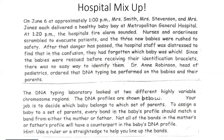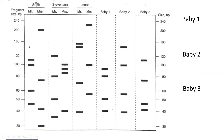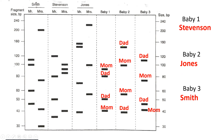Here's a practice question: you're given unique banding patterns from three different sets of parents and three babies, and you have to figure out which baby came from which parents. Remember, a baby is made half from one parent and half from the other. So a DNA fragment in baby one had to come from one of baby one's parents. Looking at fragment sizes on the gel axis, I can match baby one's fragments to the Stevensons, so baby one is baby Stevenson. Baby two is baby Jones, and baby three is baby Smith.